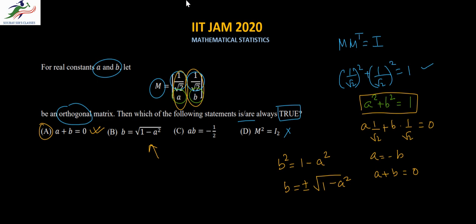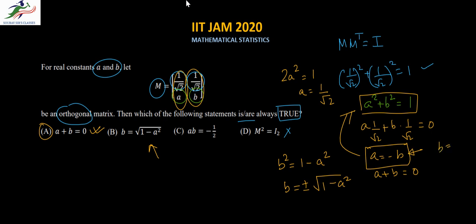The last option left is C. We need to find the values of A and B individually. Since A + B = 0, A = −B. Substituting into A² + B² = 1 gives 2A² = 1, so A = 1/√2 and B = −1/√2 (or vice versa). Therefore the product AB = −(1/√2)² = −1/2. So option C is also correct.